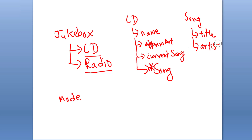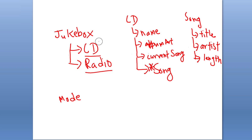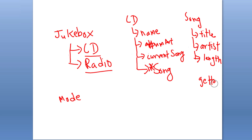A song will also have the length of the track. We have now constructed the CD side of the design. We also need to consider the methods that can be invoked on CD and Song. When a song is constructed, the values for title, artist, and length are set and we don't need to change them afterwards, so we are only going to make getters for all these fields.